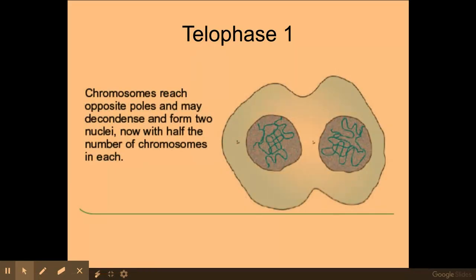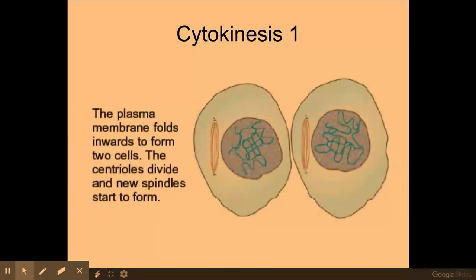The next phase is telophase 1, and this is where the chromosomes begin to uncoil and become less condensed. The nuclear envelope will start to reform and the process of cytokinesis will begin. So cytokinesis is where that membrane will pinch off, comprising and making up my two cells.